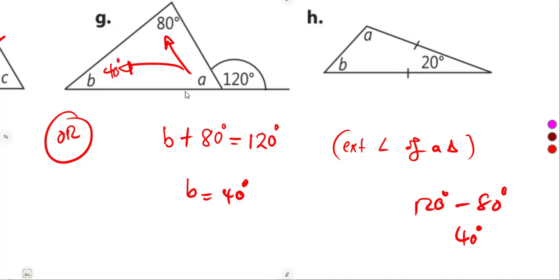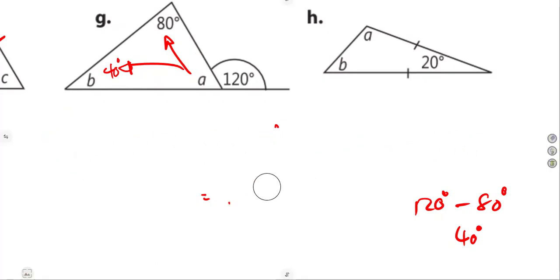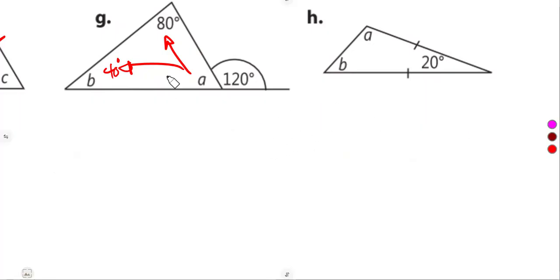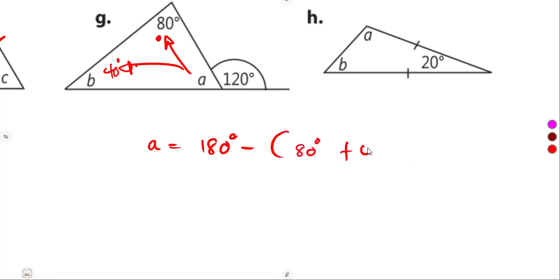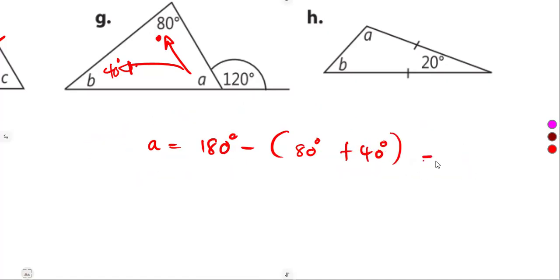To find angle A, you can use angles on a straight line or angles in a triangle. With two known angles inside the triangle — 80 degrees and 40 degrees — subtract from 180: 180 minus 120 gives 60 degrees. You will still get the same answer of 60 degrees.